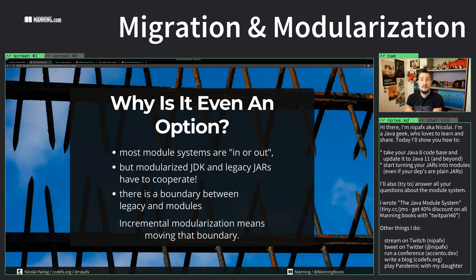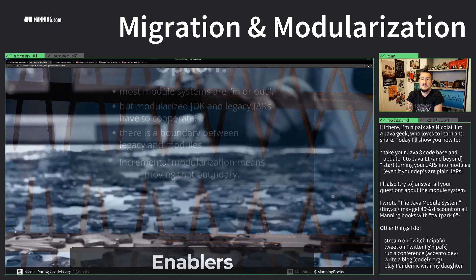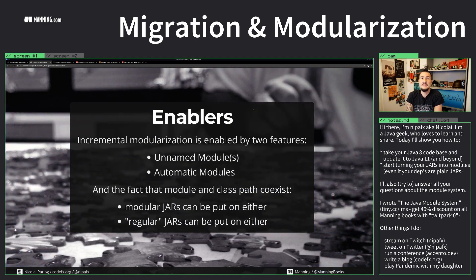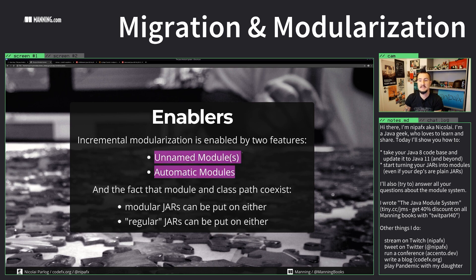Most module systems are all-or-nothing — everything is a module or nothing is a module. But we already covered the unnamed module, which helps with that. There's also something called automatic modules, and we're now going to see how these two mechanisms — unnamed module and automatic modules — help you with incremental modularization.